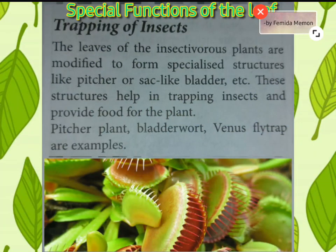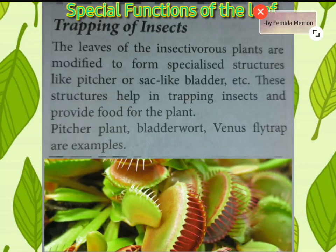Circulation also occurs in plants. Special functions of the leaf are as follows. Number one, trapping of insects: the leaves of insectivorous plants are modified to form specialized structures like pitcher or sack-like bladder, etc. These structures help in trapping insects and provide nutrients for the plant.